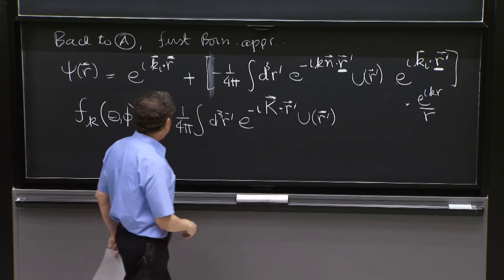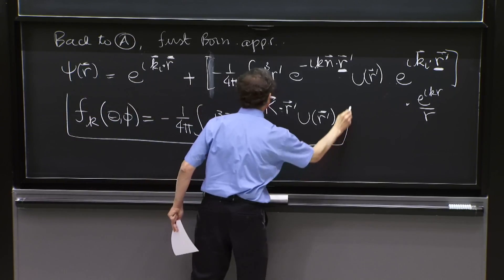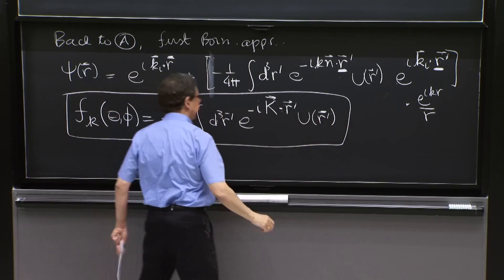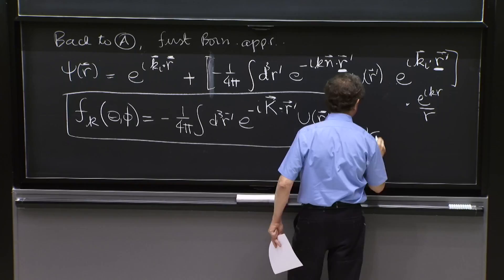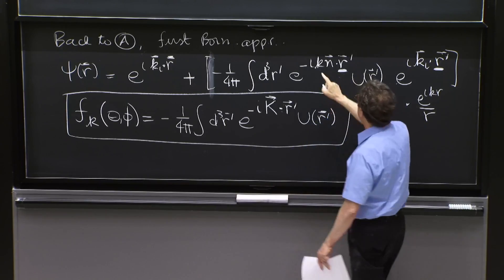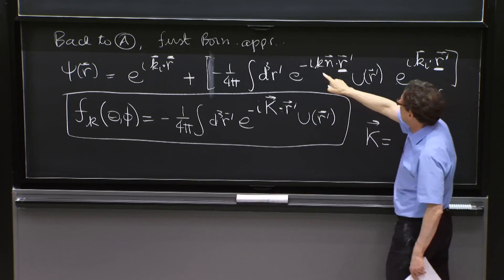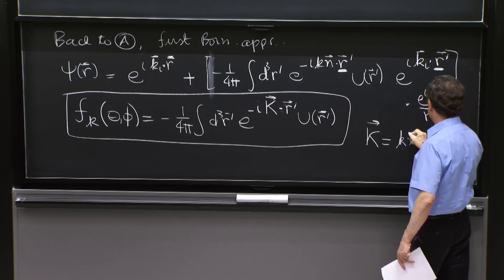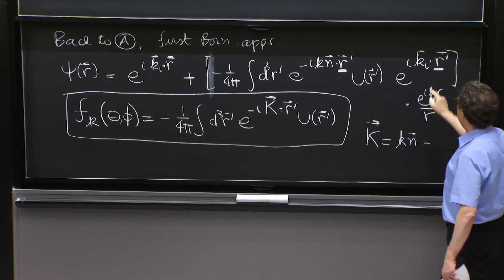Where this capital K vector is equal, I kept the sign, k n minus,